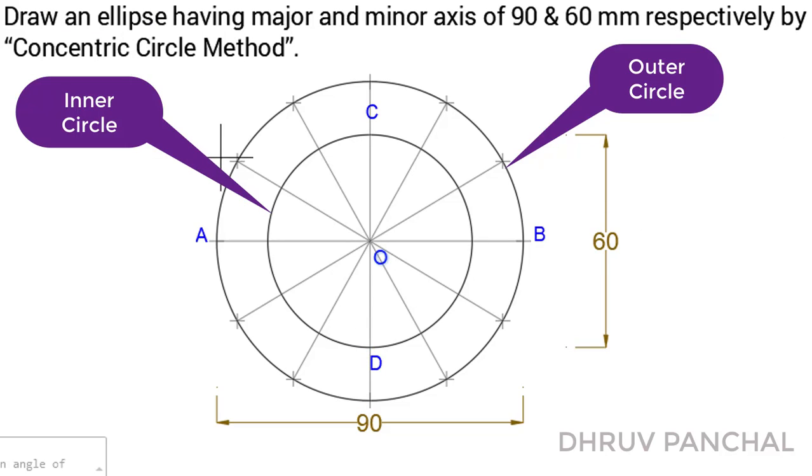Now, we will name points on outer circle by point 1, point 2, point 3, up to point 12 and on inner circle by point 1 dash, 2 dash, 3 dash, up to point 12 dash.